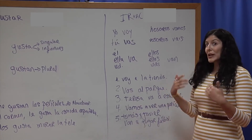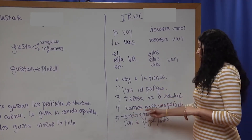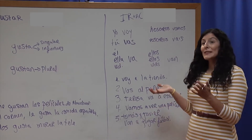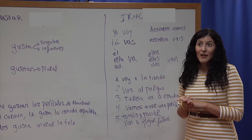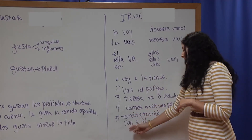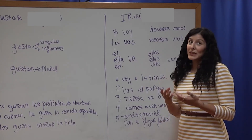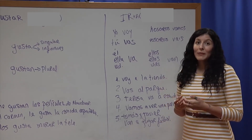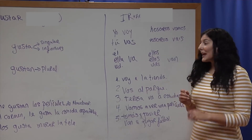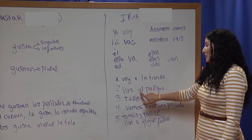'We are going to watch a movie' would be 'Vamos a una película.' And 'Tomás and Javier are going to play soccer' would be 'Tomás y Javier van a jugar fútbol.' All of these actions are in the immediate future — they haven't been done yet but will be done very soon. Notice that I have used the helping word 'a' with each one.